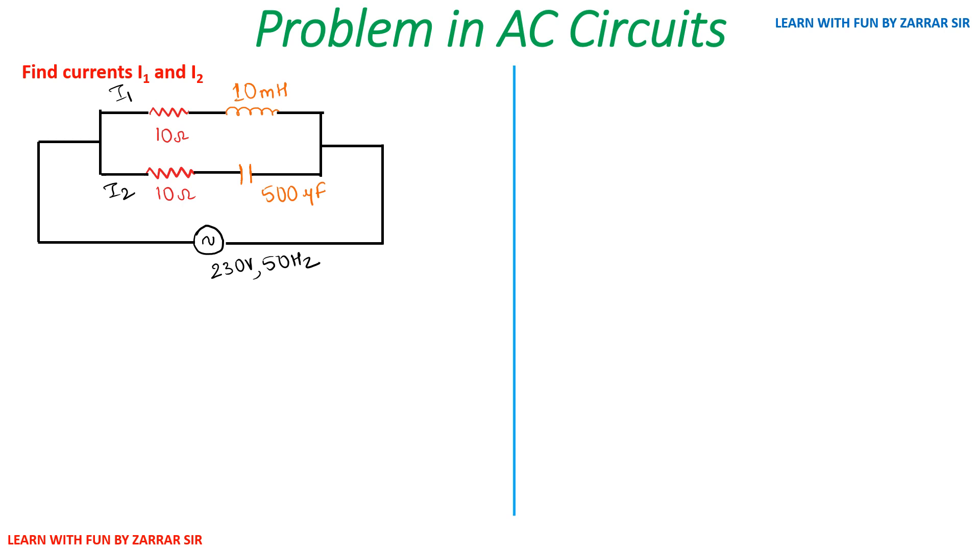I'll be targeting an AC circuit problem which includes all three passive components: resistor, inductor, and capacitor. As you can see, there are three things over here. You have a resistance, a capacitance, and an inductance. I have a resistor, I have a capacitor, and I have an inductor.